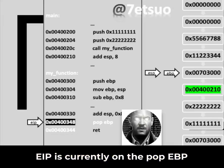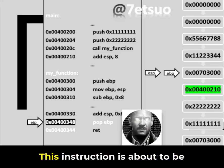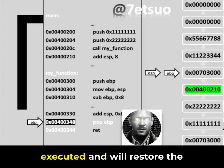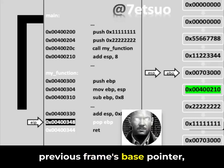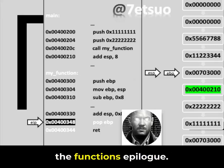EIP is currently on the POP EBP instruction within my_function. This instruction is about to be executed and will restore the previous frame's base pointer, signifying the end of the current function's frame. This restoration is part of the function's epilogue.